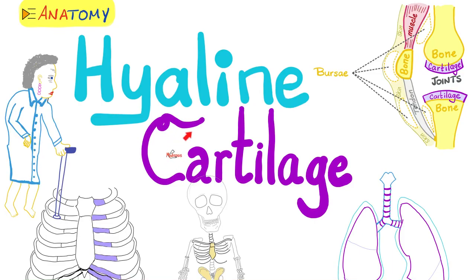Hey guys, it's Medicosis Perfectioneris, where medicine makes perfect sense. Continuing our anatomy playlist — in previous videos we talked about skin, fascia, tendons, and bursa. Today we'll talk about the first type of cartilage, which is hyaline cartilage.